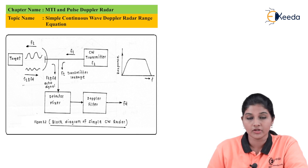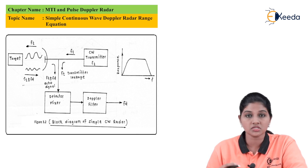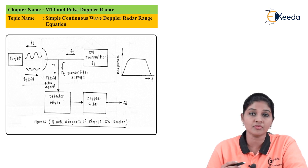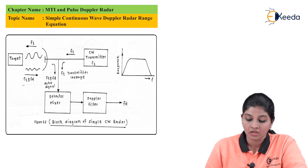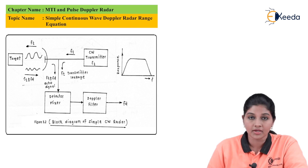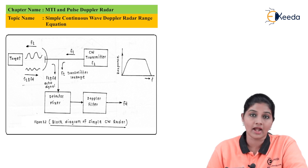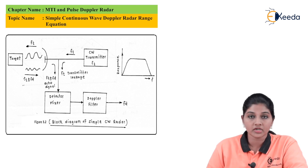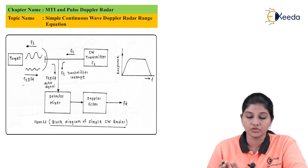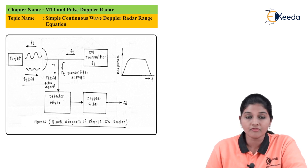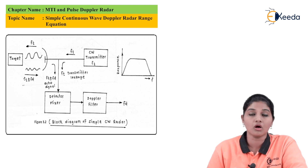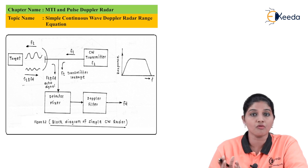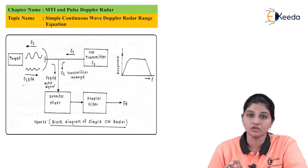After receiving the echo signal at frequency FT ± FD, the signal is multiplied — or the transmitter leakage is added to the received echo signal — and it is mixed using a detector mixer. The function of the detector mixer is to add the transmitter leakage with the echo signal. The Doppler filter is then used to allow only the Doppler frequency shift to pass, removing all high-frequency noise components other than the Doppler frequency.